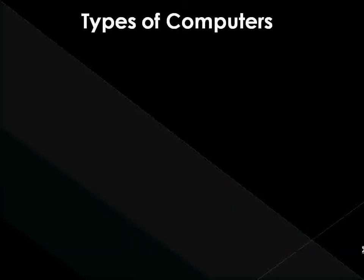Types of computers. The very word 'computers' reminds one of the desktop computers used in offices or at homes. There are different categories of computers that have been devised in keeping with our varied needs. Supercomputers are the most powerful computers that exist. They have very high processing power and are used by large organizations in advanced applications like space exploration.